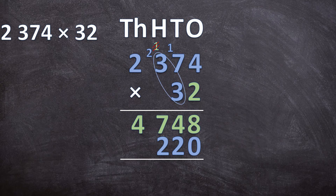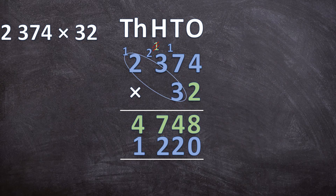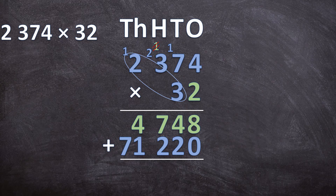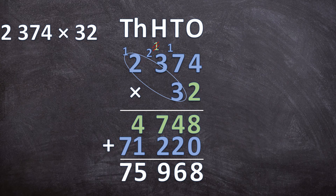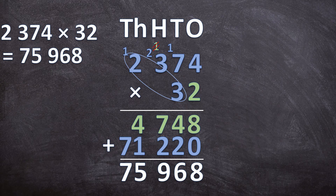Next, 3 times 3 is 9, plus the carried 2 is 11 — write down the 1 and carry over the 1. Lastly, 2 times 3 is 6, plus that 1 is 7. So 30 times 2374 is 71220. Now add the two answers together: 8 plus 0 is 8, 4 plus 2 is 6, 7 plus 2 is 9, 4 plus 1 is 5, and 7 is just 7. So 2374 times 32 is 75968.